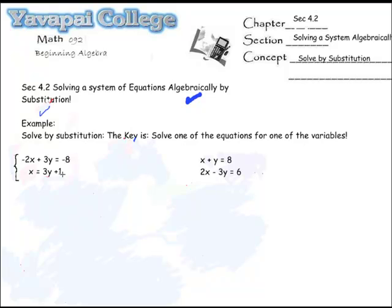And as you look at these two equations, very conveniently, although this won't always be the case, the second equation is solved for x. So what I'm going to do is I'm going to take what x is equal to, which is x equals 3y plus 1, and I'm going to plug it in for x.